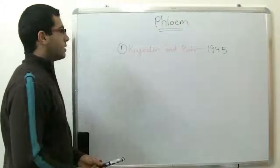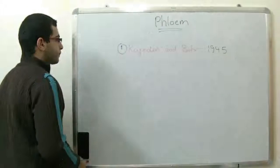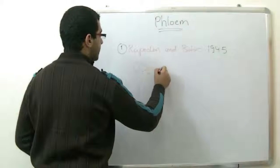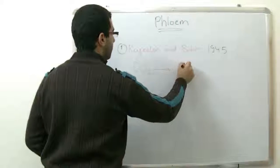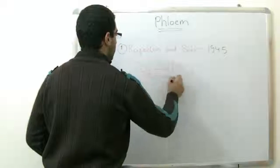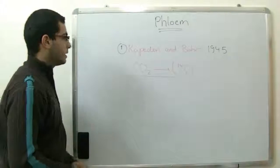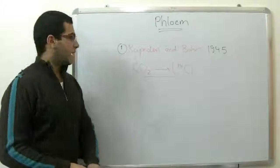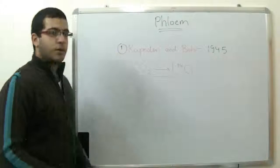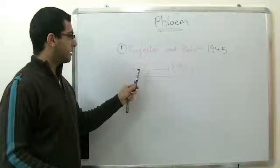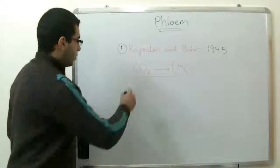What those two scientists did is supplying the plant with carbon dioxide that contains the radioactive isotope of carbon-14. So when the plant uses this radioactive isotope during the photosynthesis process and using it in the dark reactions as we mentioned before, the plant will fix this carbon dioxide into carbohydrates.